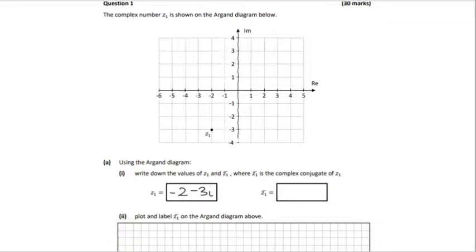In the second part we have Z bar. This means the conjugate, so if we have Z = a + bi then Z bar or the conjugate is a - bi. So therefore we need to change the central sign to a plus and we can plot it in.